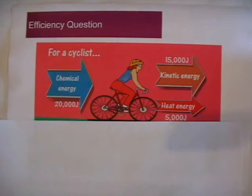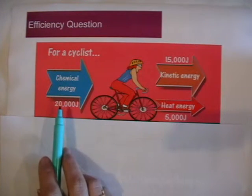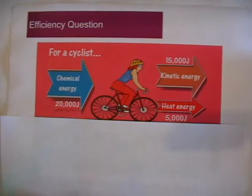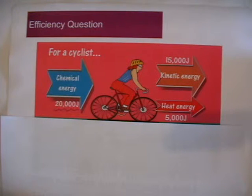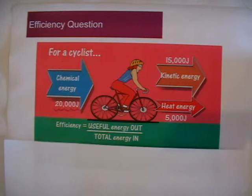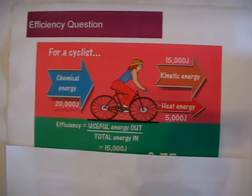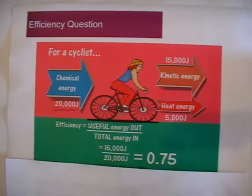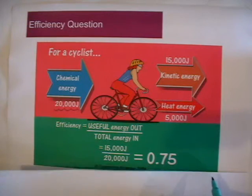The third example involves a cyclist. The original energy input is the chemical energy in the food she has consumed, which is 20,000 joules. We then have 15,000 joules of kinetic energy and 5,000 joules of heat energy output. Efficiency = useful energy out over total energy in = 15,000 joules of kinetic energy divided by 20,000 joules of chemical energy, which gives an efficiency of 0.75.